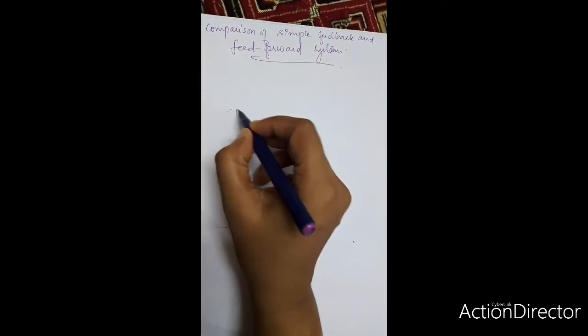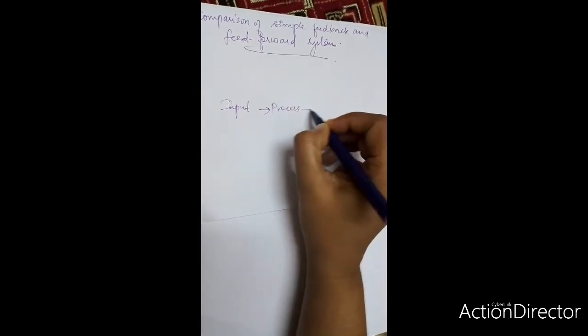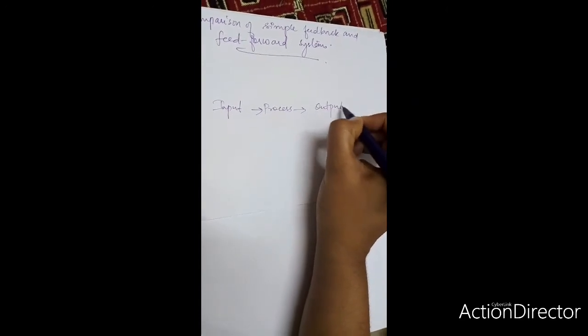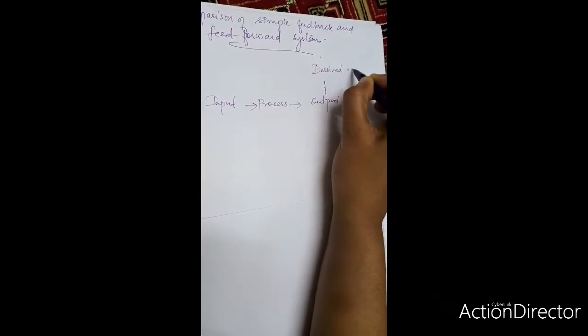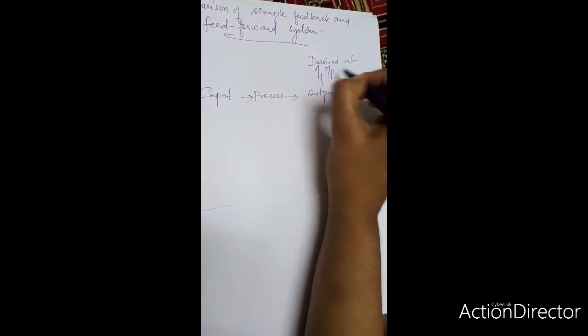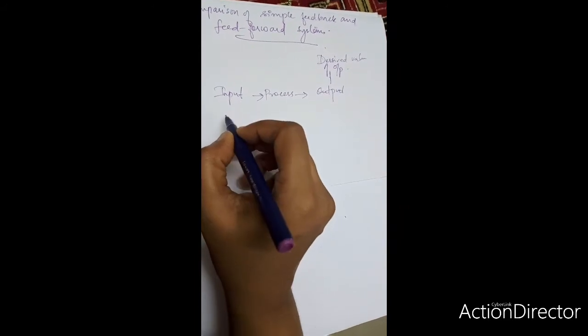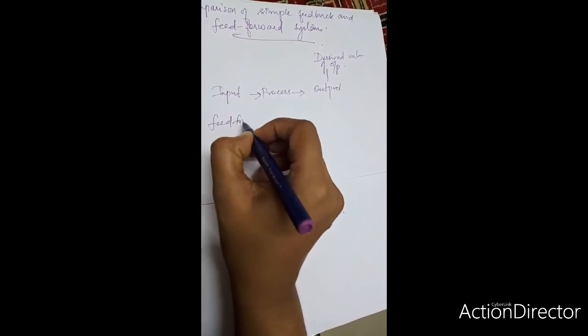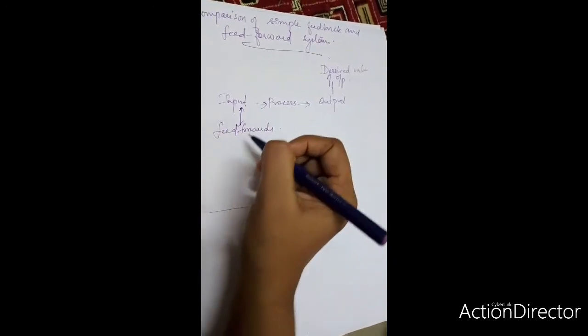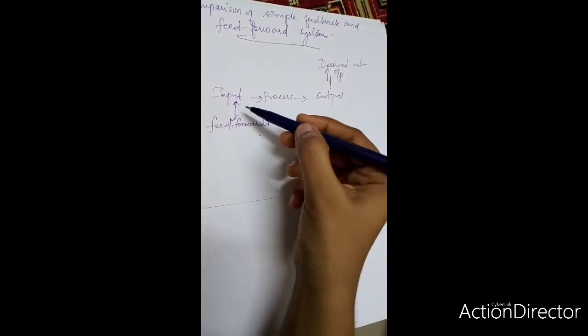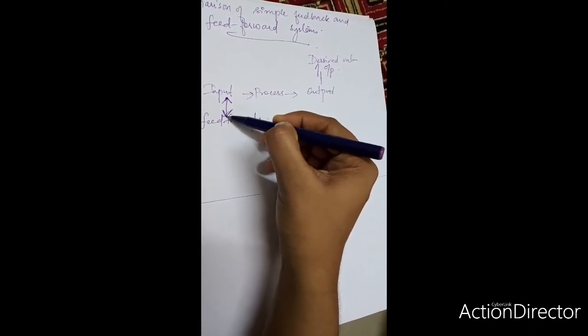There is an input factor. There is a processing process that is happening and there is an output that we receive. There can be desired values of outputs and feed forward happens before this input. Here we have studied that in feed forward control system, what happens before giving the input, we are controlling the process. That is feed forward control.